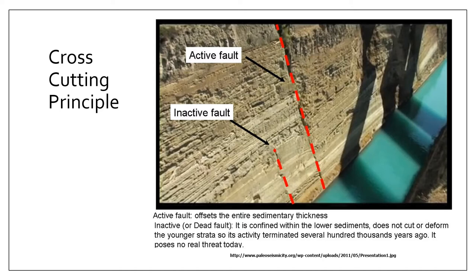An important principle for active faults is the cross-cutting principle. As we can see here, we have a fault that is cutting through a strata and has offset the entire thickness. If this strata contains a Holocene sediment, then we can conclude that this fault is active. And if another fault does not cut through our Holocene sediments, then we can say that fault is older than Holocene and therefore an inactive fault.